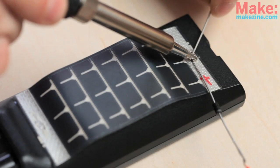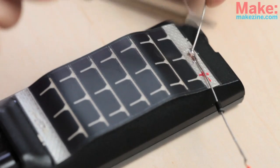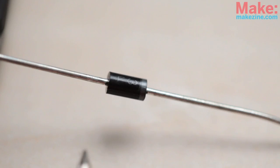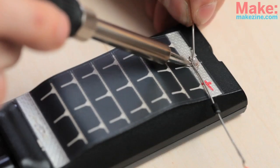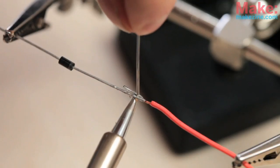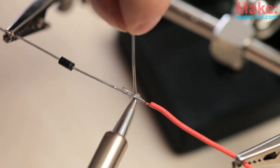We're going to use this diode to ensure that the electricity only flows from the solar cell to the battery. Solder the anode side, the side without the stripe, to the positive terminal of the solar cell, and the cathode side to the wire which will connect to the positive terminal of the battery compartment.